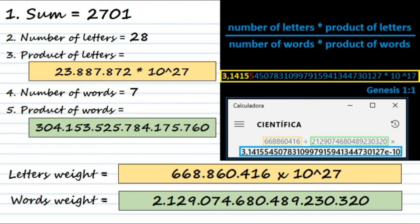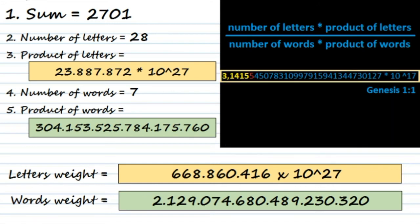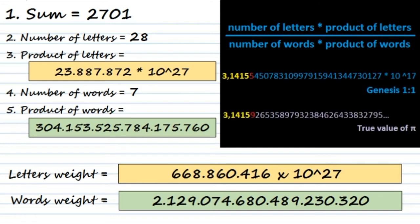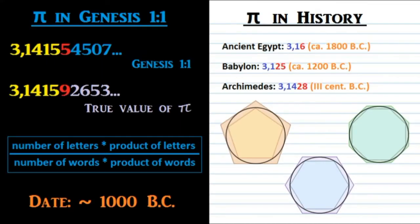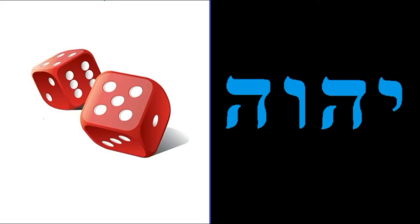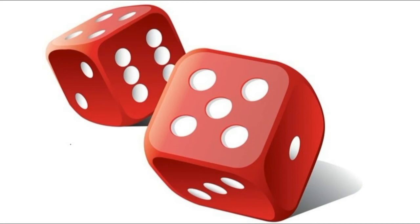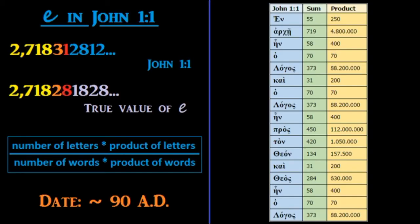Comparing: Genesis 1:1 gives 3.14155450... × 10¹⁷, while the true value of pi is 3.14159265..., indefinitely. The Genesis 1:1 value is a rational fraction, so it can only approximate pi — but it does so to the 5th significant figure, surpassing approximations reached by mankind during the following 1,000 years. Is this telling us that the author already knew this number, or is it a coincidence? But if it's a coincidence, how is it that with the same formula we find the number e in John 1:1?